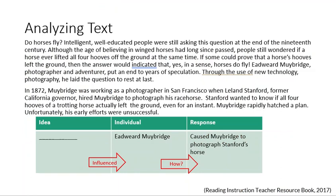Now we're going to look at the text provided and complete the chart below. 'Do horses fly? Intelligent, well-educated people were still asking this question at the end of the 19th century. Although the age of believing in winged horses had long since passed, people still wondered if a horse ever lifted all four hooves off the ground at the same time. If one could prove that a horse's hooves left the ground, then the answer would indicate that, yes, in a sense, horses do fly.'